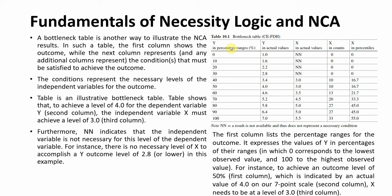The first column lists percentages for the outcome, where 0 is the lowest observed value and 100 is the highest. For instance, to achieve 50% of the outcome you need X at a specific level, and to achieve 100% of the outcome you need X to be at least 5.5.